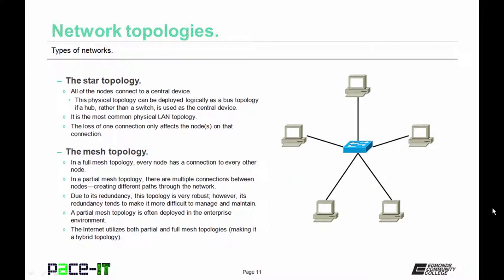Now let's move on to the star topology. All of the nodes connect to a central device. This physical topology can also be deployed logically as a bus topology if a hub rather than a switch is used as the central device. But if a switch is used, then the physical and logical topologies are the same. The loss of one connection only affects the nodes on that connection.